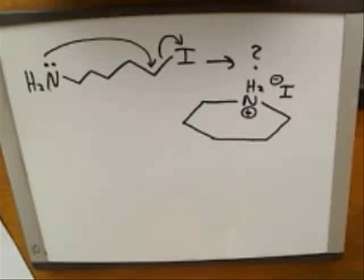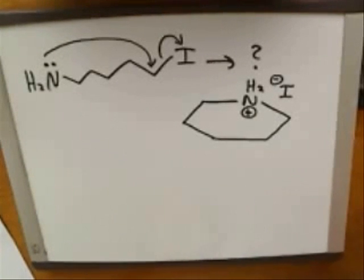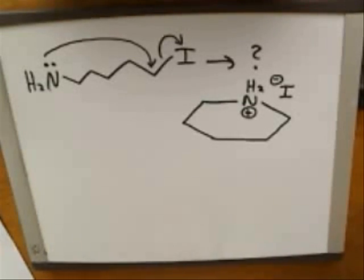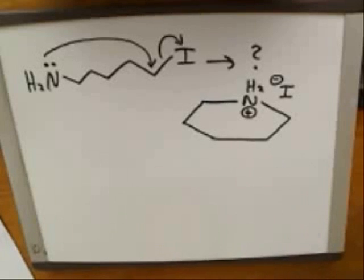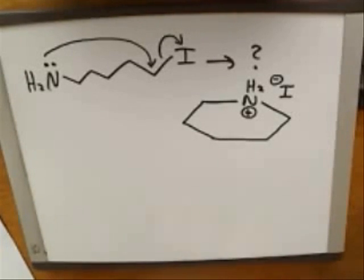The key point is: even if you've never heard of SN2 reactions before, or had no idea this was an SN2 reaction, you should still have been able to draw the right product once given the electron-pushing arrows. Once you've been given the arrows, it doesn't matter whether you know the name of the mechanism. Even if you've never seen this reaction before, the arrows should make the product clear.